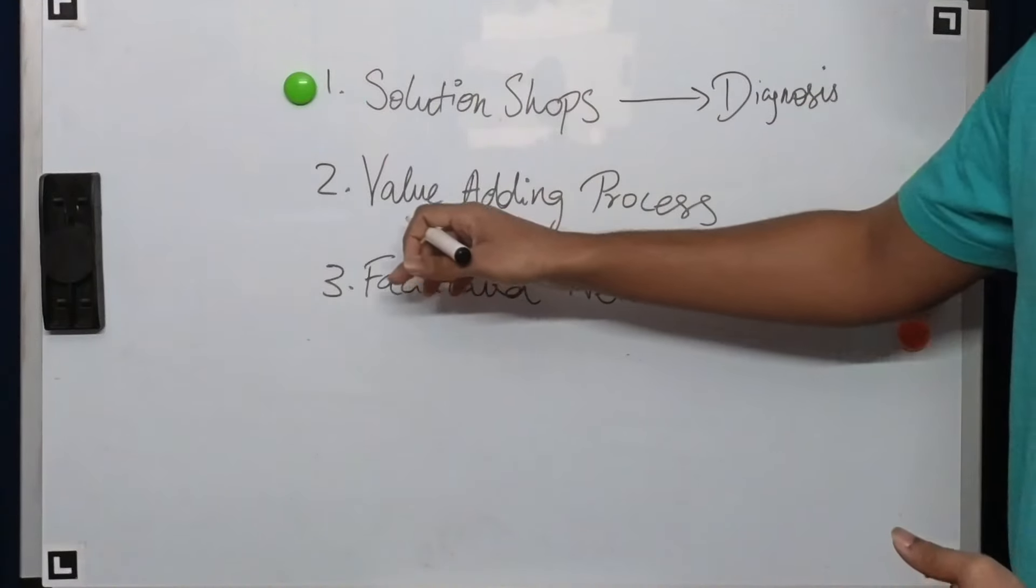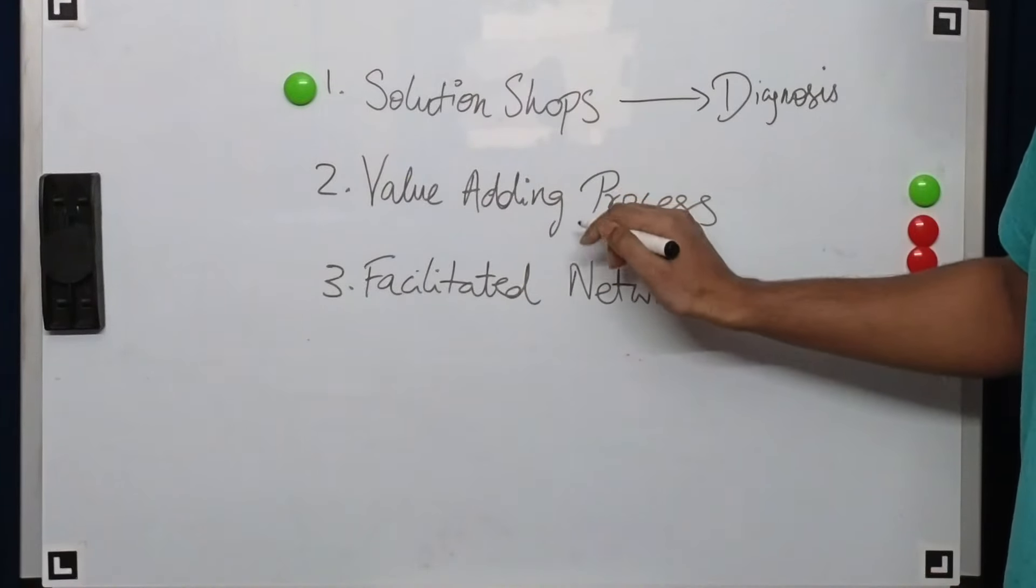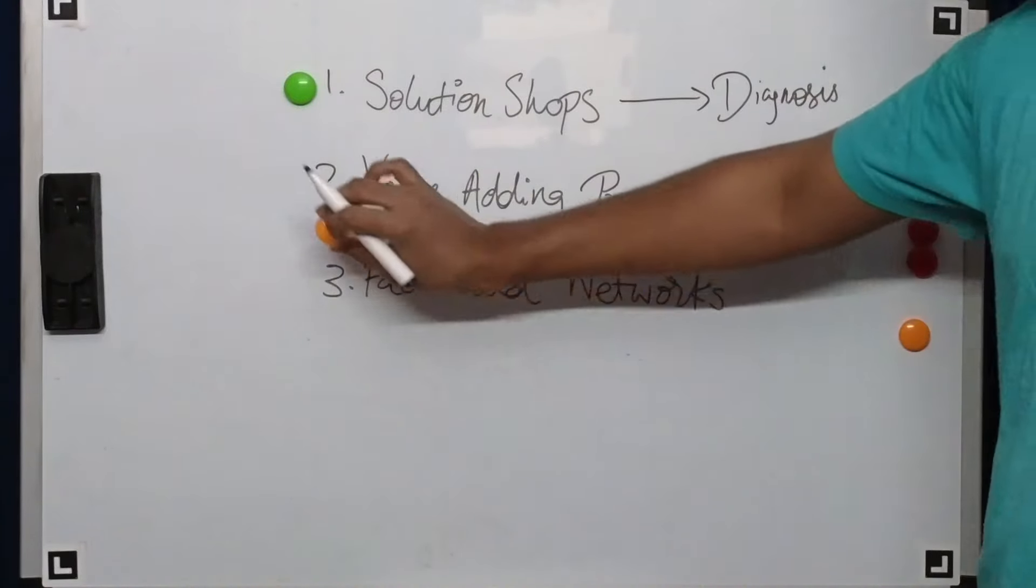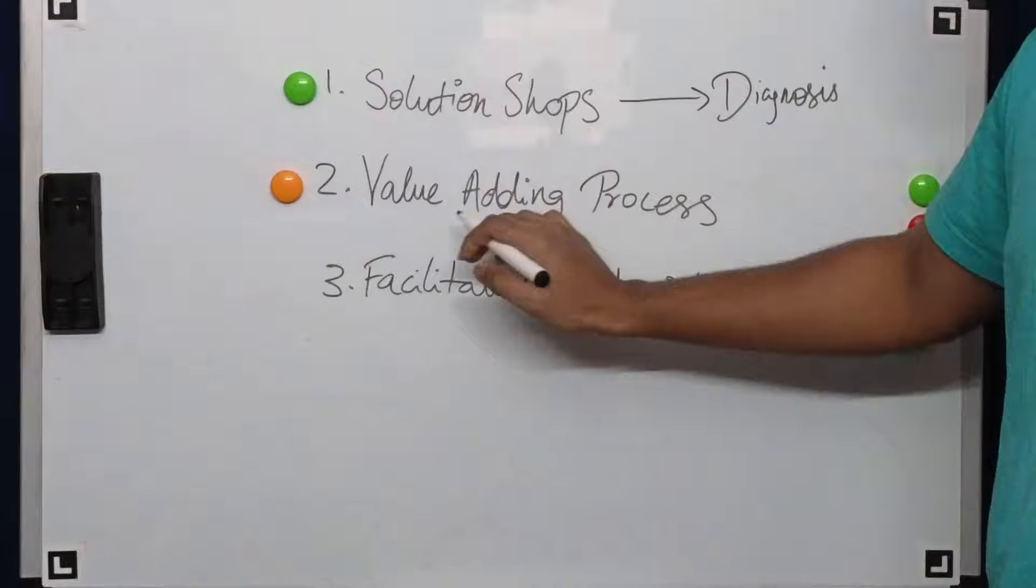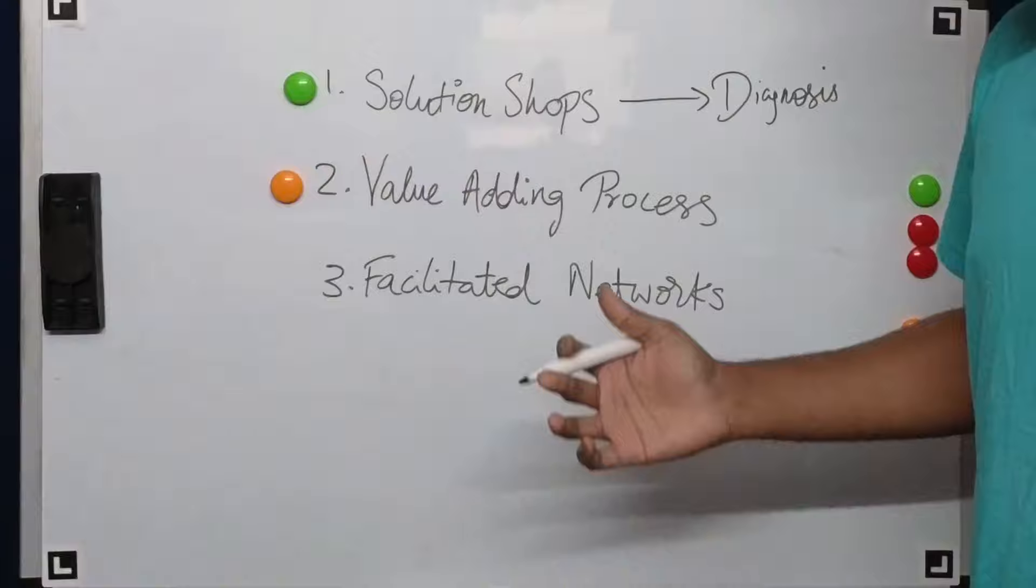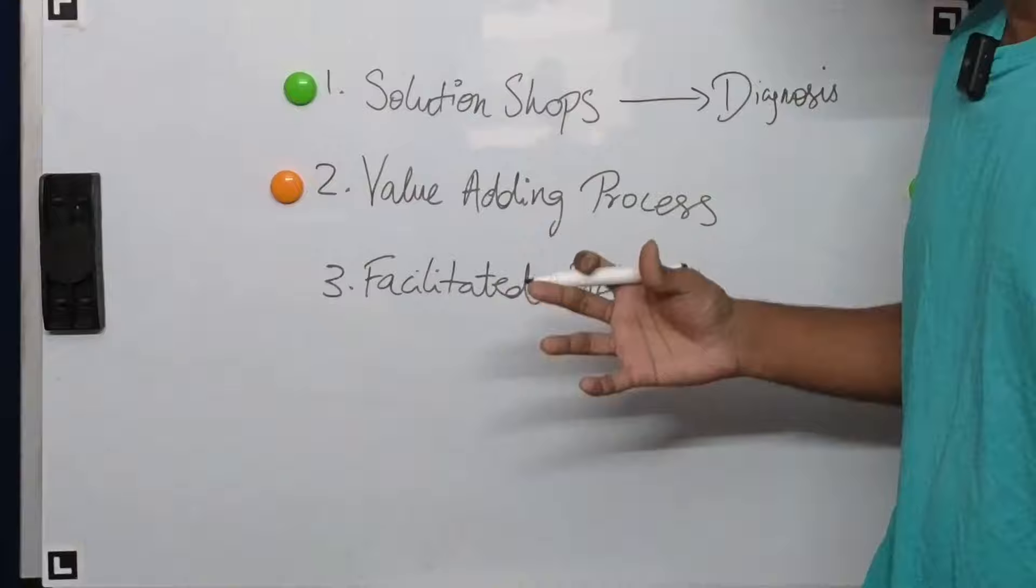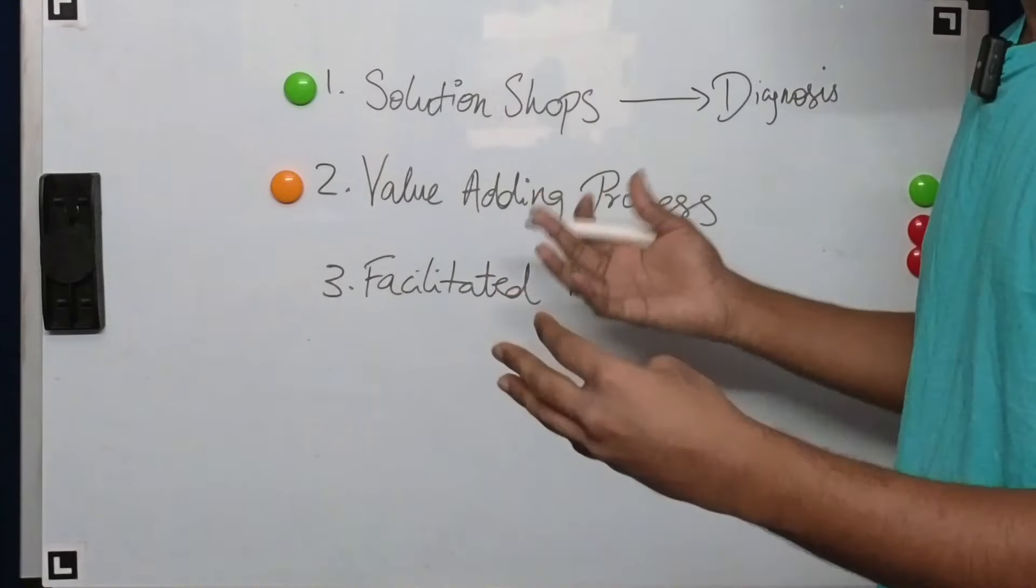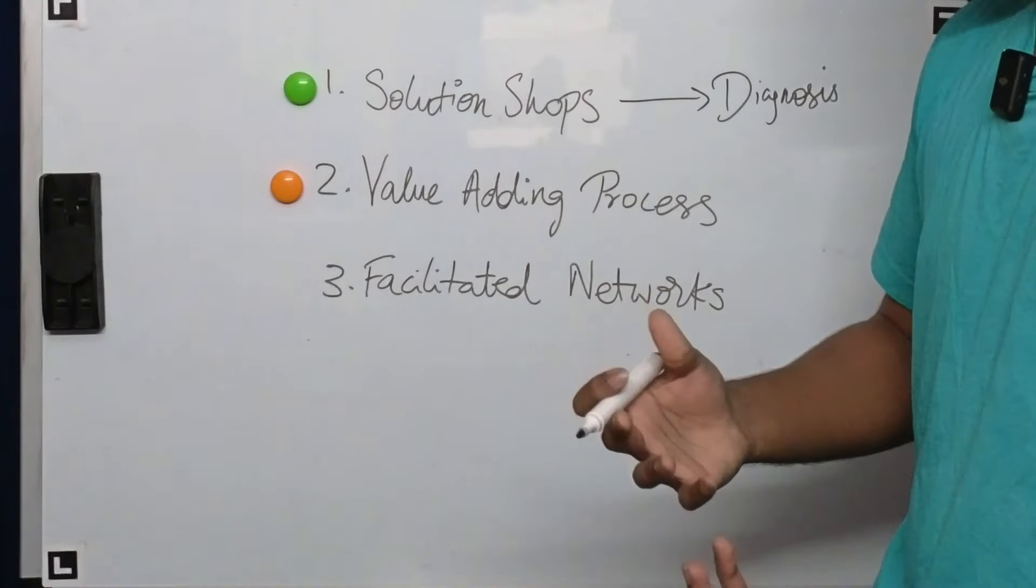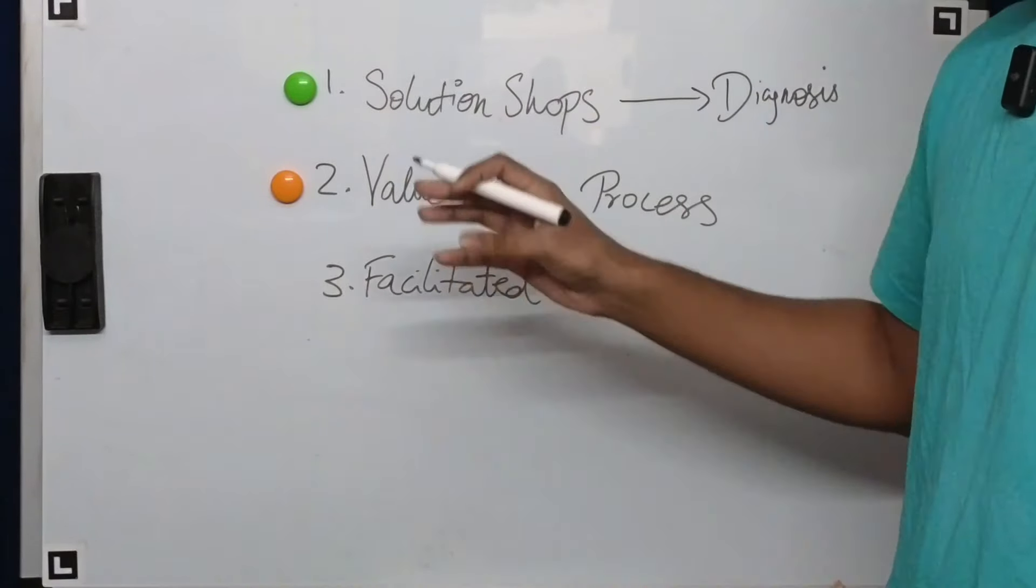Now, what the innovators prescription argues is that instead of having all of the additional processes in the same physical location, there needs to be different value adding processes that are their own organizations. For example, what they suggest is that if somebody has the diagnosis of cataract, there should be a center dedicated solely to just doing cataract surgeries. Value adding processes in the business sense is any place where, for example, you take in raw materials, you take in iron ore and then you make steel, or you take in steel and then you make railway tracks.